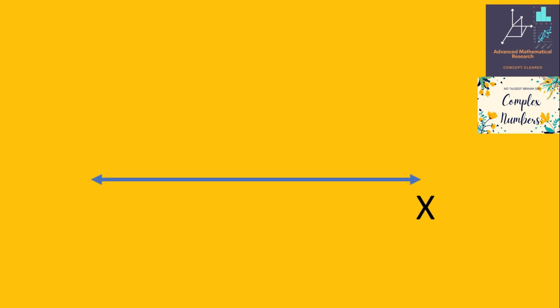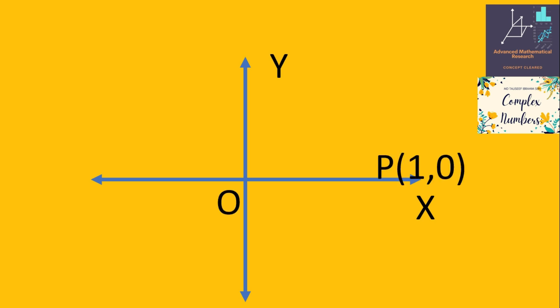Let's first draw the x-axis, then draw the y-axis. The point of intersection of the x-axis and y-axis gives the origin, O. Now let's consider a point P which is at a distance of one unit from the origin, located on the x-axis.